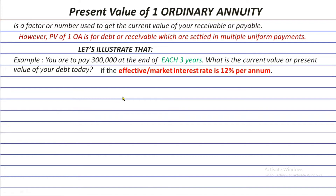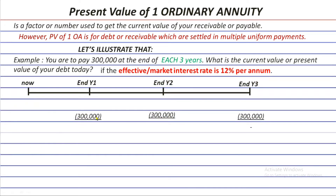If you put it in a timeline, the pattern of payments looks like this: at the end of each year you pay 300,000, and at the end of year three the debt is fully settled, which is why the balance is zero there. The question mark is the amount we're trying to find. Even if we don't know it yet, we know it will grow by 1.12 each year — times 1.12 — and then minus 300,000 at each period.